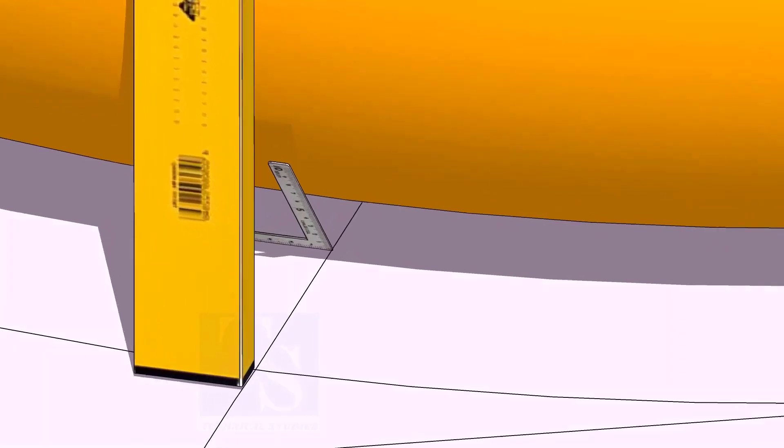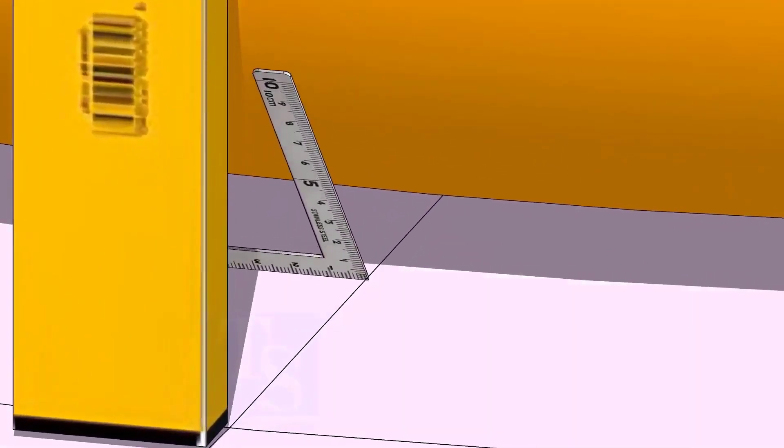At the bottom side, use a small right angle and transfer the line to the elbow on both sides.